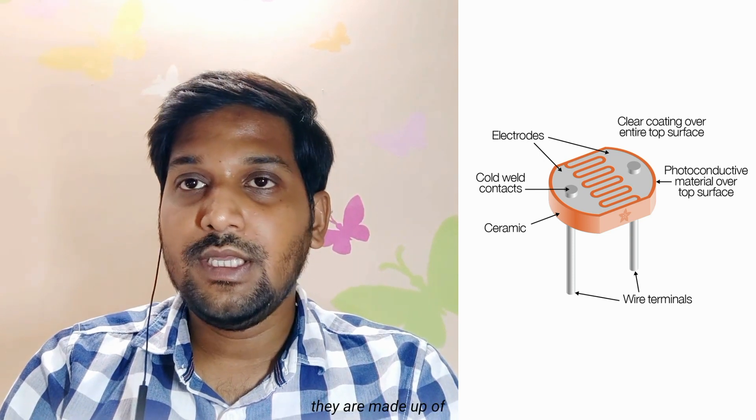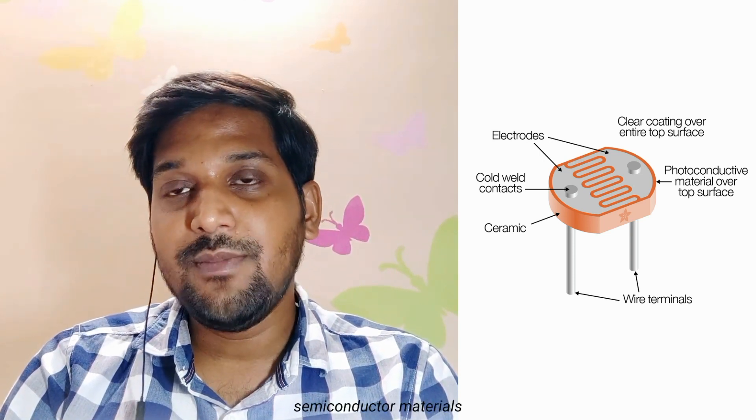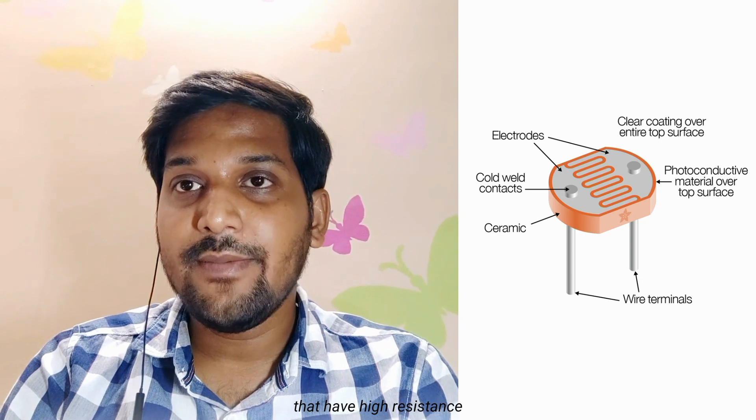Next on the list, a light-dependent resistor also known as photoresistor or LDR. It is basically a photocell that works on the principle of photoconductivity. They are made up of semiconductor materials that have high resistance. It decreases the resistance when the light intensity is high and increases when the light intensity is low. It is mainly used to automatically trigger things when light is low or high.